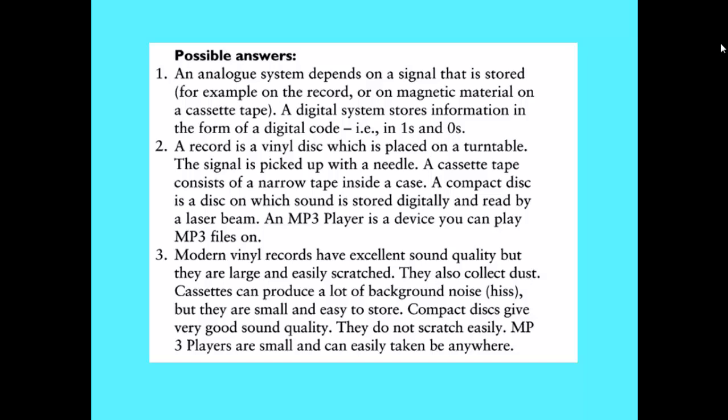Number three: what are the advantages and disadvantages of each? Modern vinyl records have excellent sound quality, but they are large and easily scratched; they also collect dust. Cassettes can produce a lot of background noise or hiss, but they are small and easy to store. Compact discs give very good sound quality and don't scratch easily. MP3 players are small and can easily be taken anywhere.